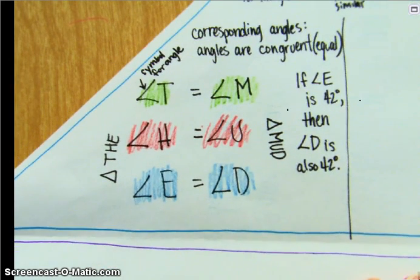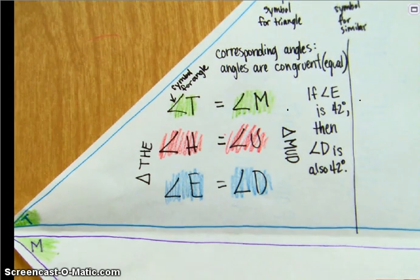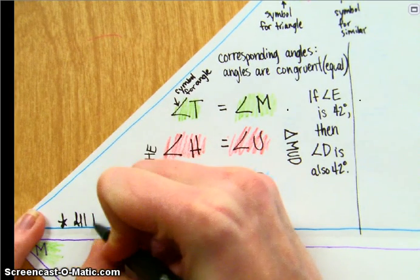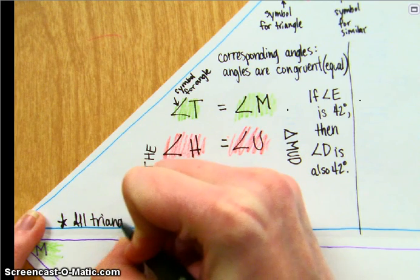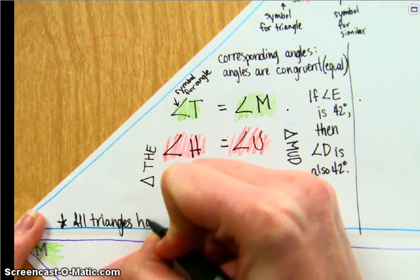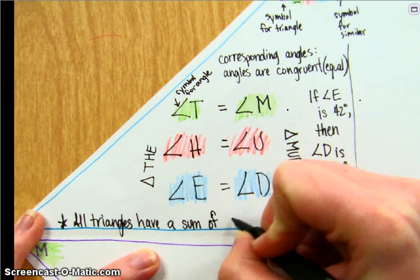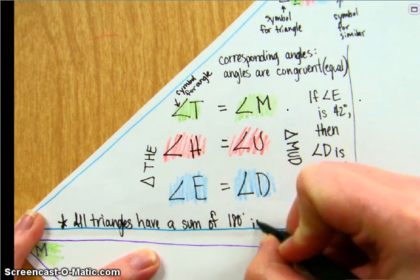And while we are doing similar triangles, it's a good time to remind you that all triangles have a sum of 180 degrees in their angles.